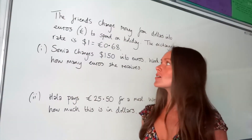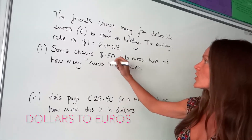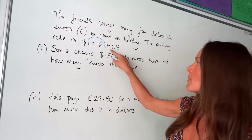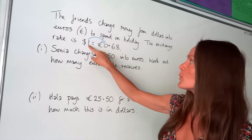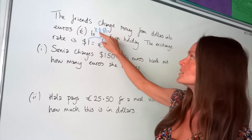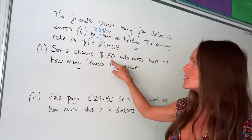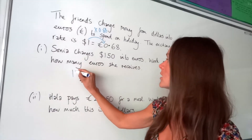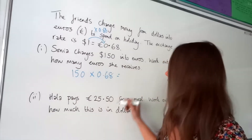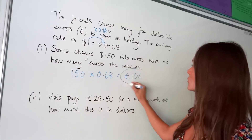There are two parts to this exam question. In the first part we're changing dollars into euros, so we're traveling this way. It must be one multiplied by 0.68 because one times 0.68 is just 0.68. So I need to do the same thing with the dollars that Sonia is going to change: 150 multiplied by 0.68. When you put that in the calculator you get a whole number — 102 euros.